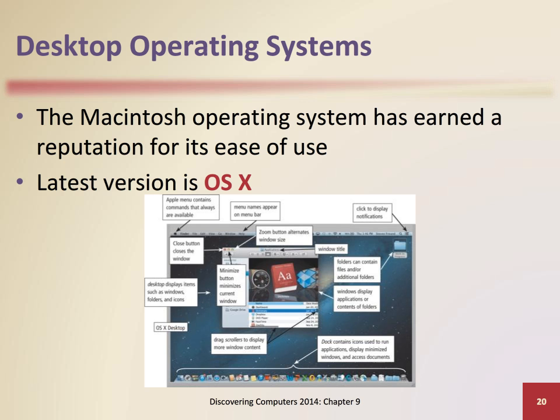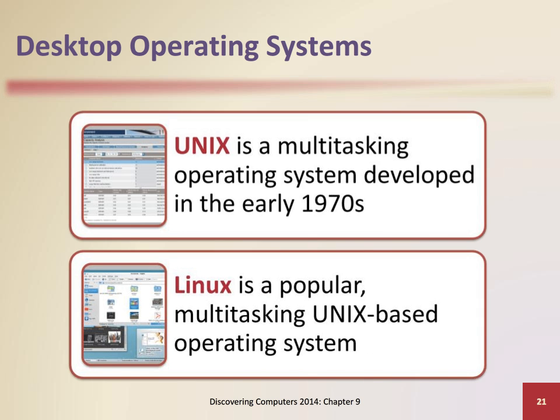The latest version of Apple's Macintosh operating system is OS X, and is only available for computers manufactured by Apple. Unix is a multi-tasking operating system with several versions. It is used by power users because of its flexibility and power, and most versions offer a graphical user interface.